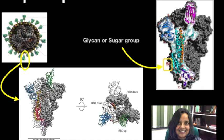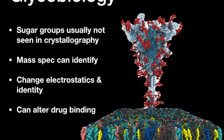But we also see that this protein has many sugar groups, or glycan groups as they're called, attached to it. Even in the cryo-EM structure we are able to maybe figure out one or two of these groups, but that's not the full story. These sugar groups or glycan groups are usually not seen in crystallography or cryo-EM. Mass spectroscopy methods can identify both the location and the identity of these glycan groups.